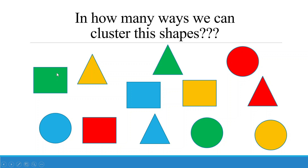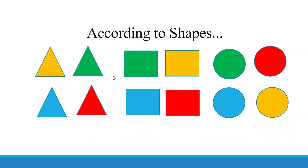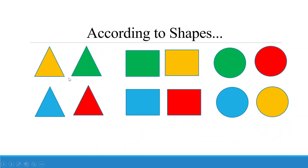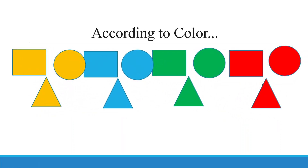Now let's try to understand the concept of cluster analysis with shapes. We can cluster these shapes in multiple ways — based on shape or color. Based on shape, we can group them as: triangle, square, and round.